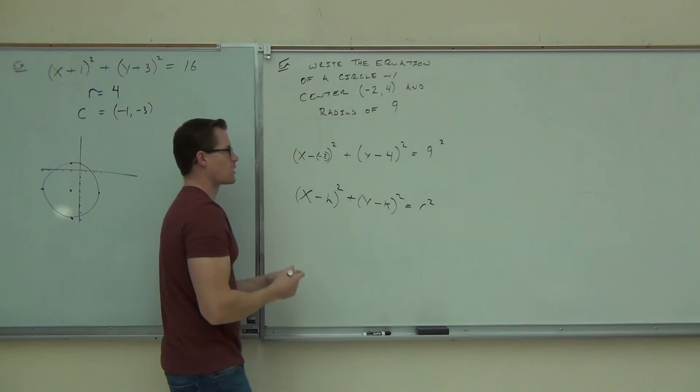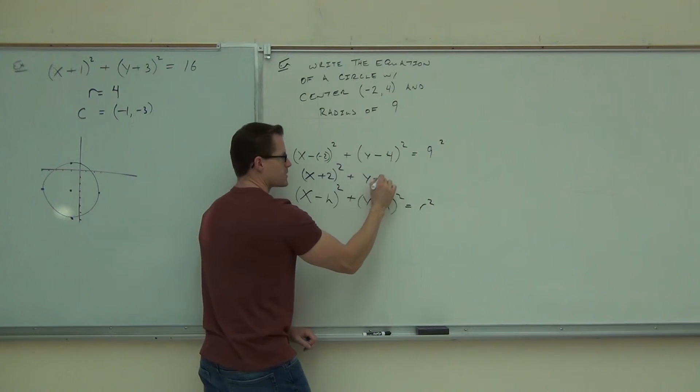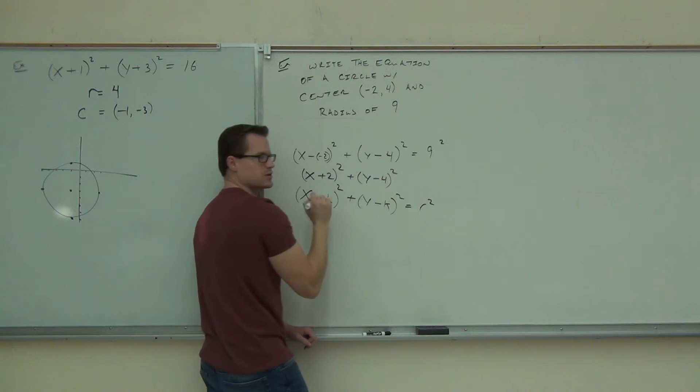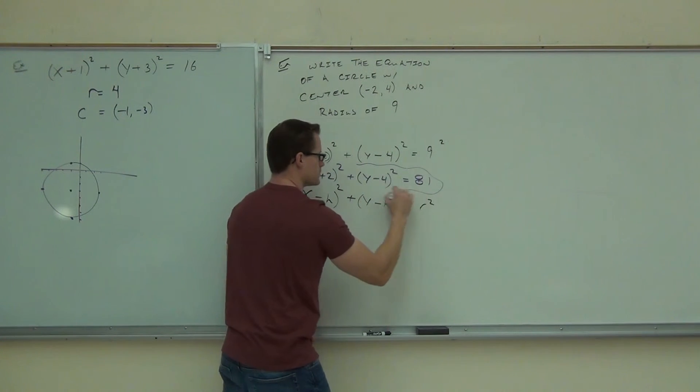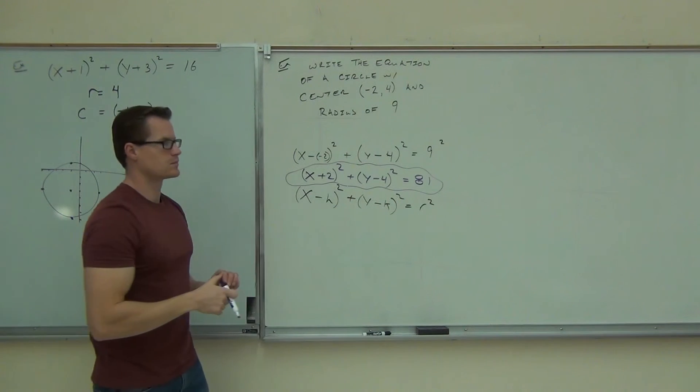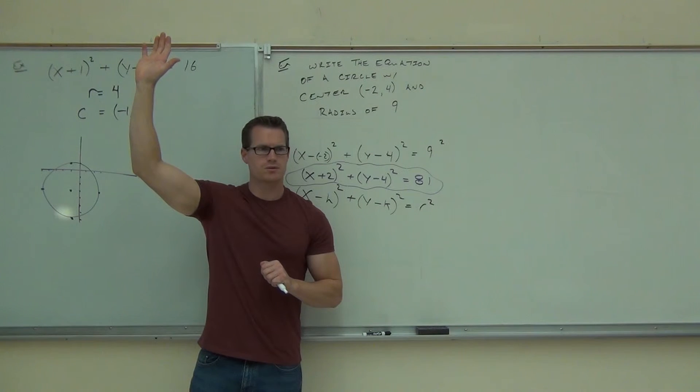So in that case, our formula for our circle is x plus 2, y minus 4, both being squared, equals 81. How many people feel okay with that so far? Would you like to try one of your other? Sure.